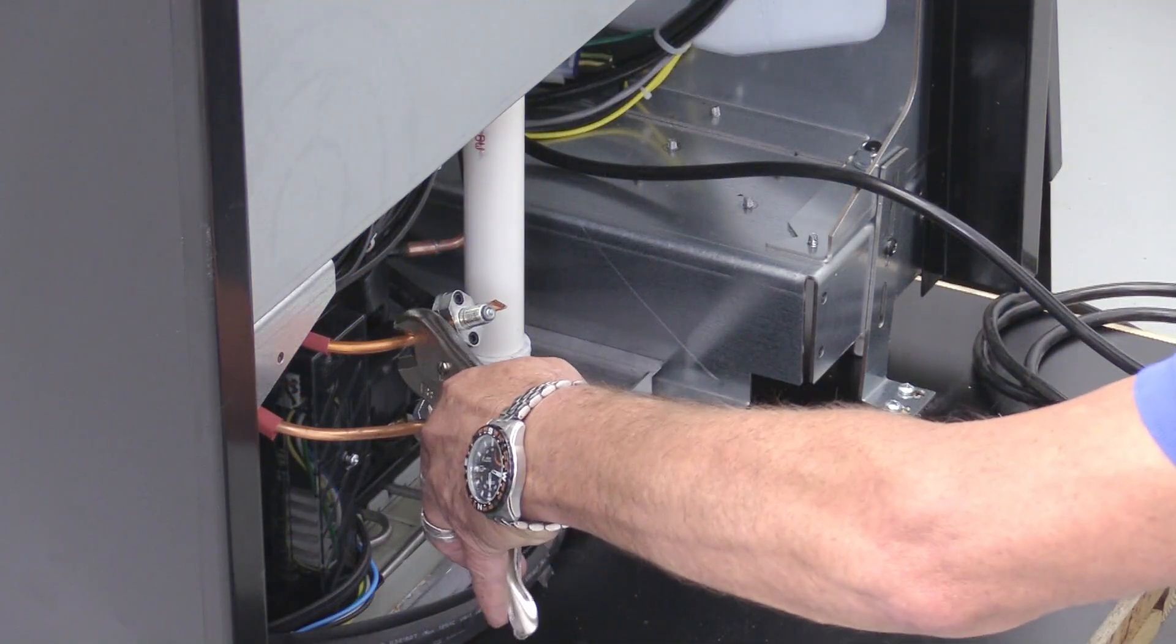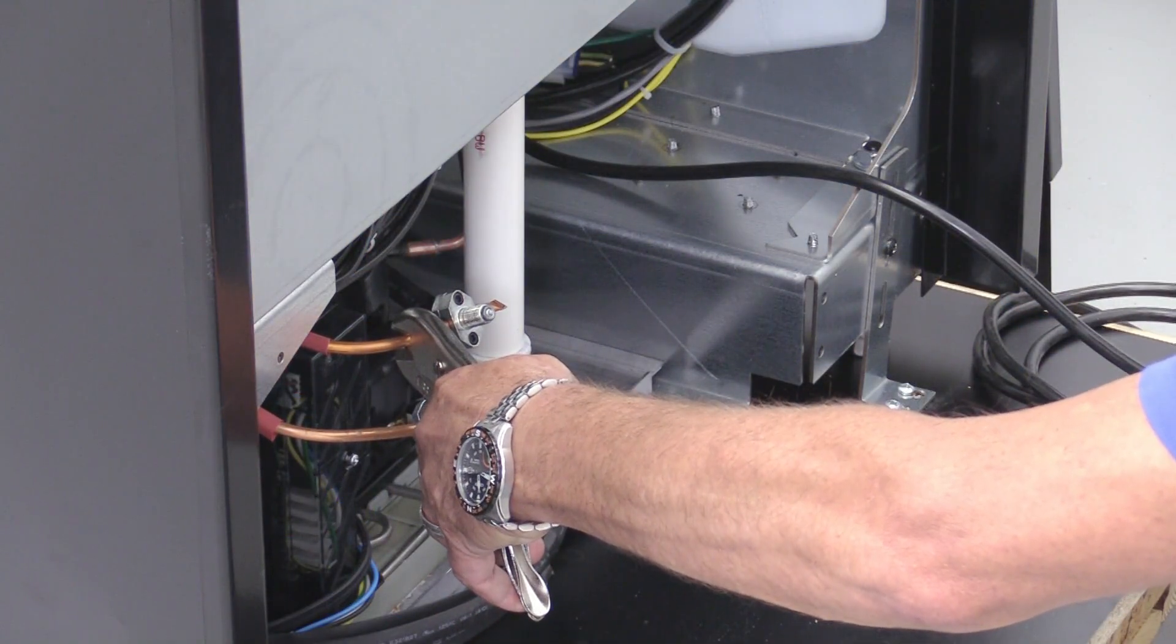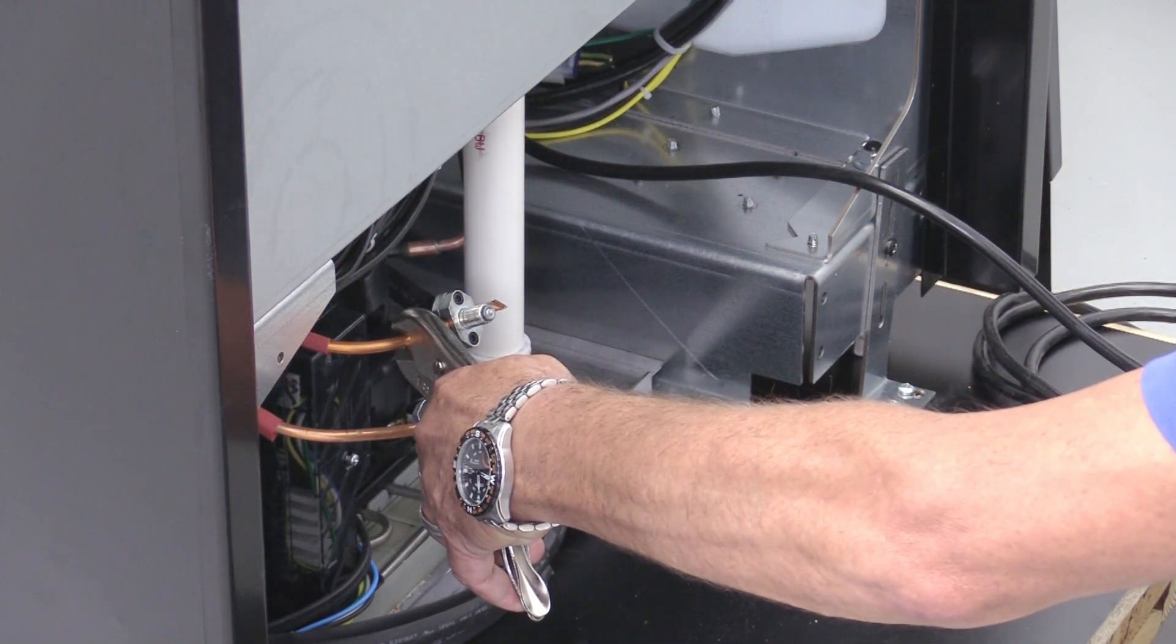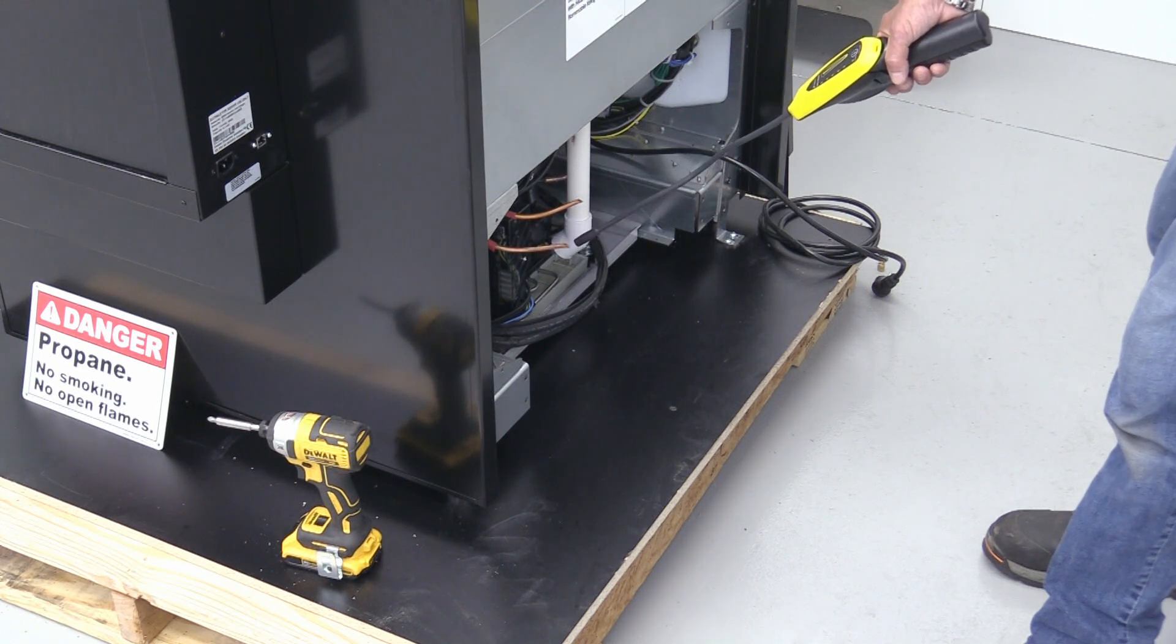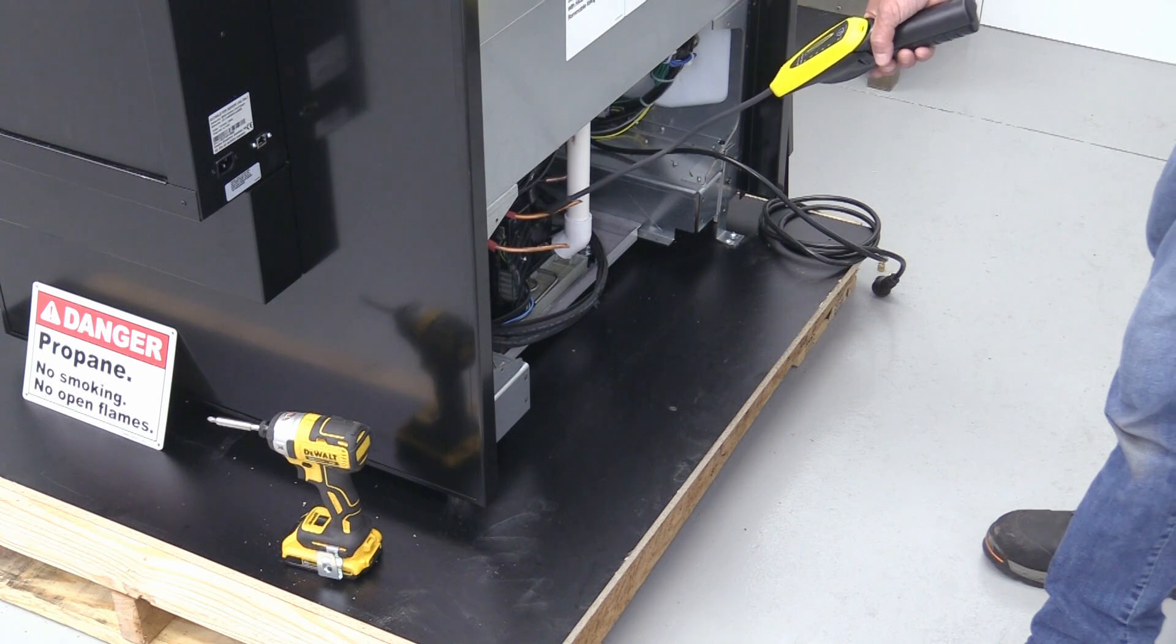Pinch off liquid and suction line process ports. Cut off piercing valves. Check for leaks and braze ends or use a hydrocarbon approved crimp on style cap.